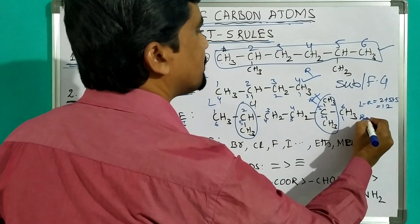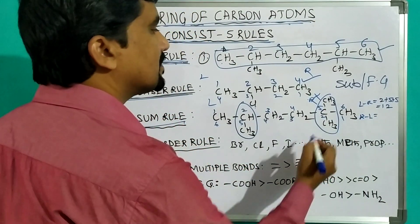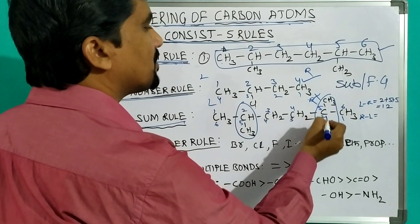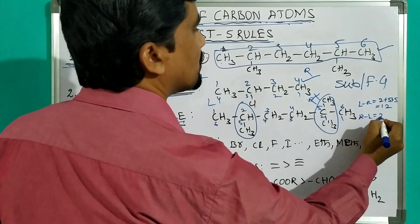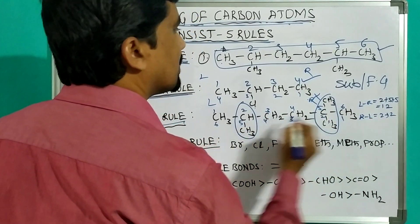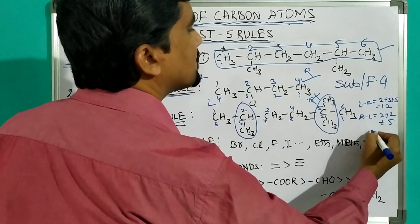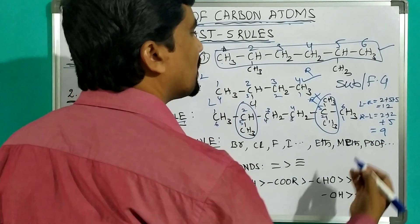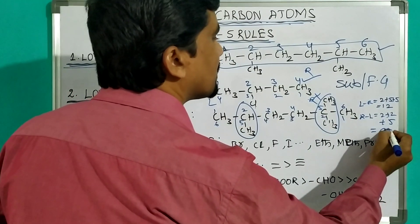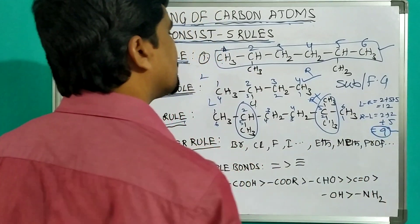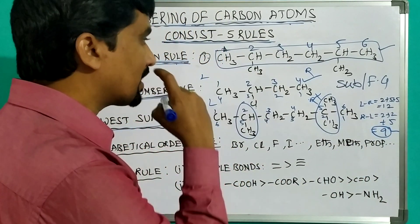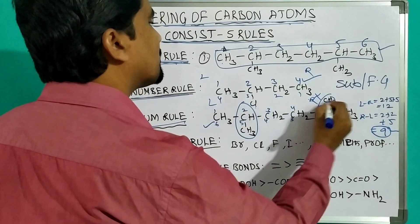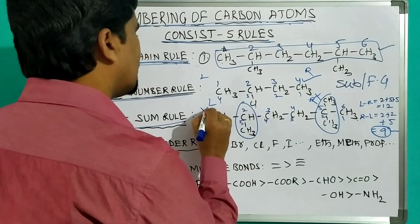Next, right to left. In this case, at the second position there are two substituents, so two plus two, plus five equals nine. So the lowest sum is nine. Therefore, numbering from right to left is correct, and left to right is wrong.